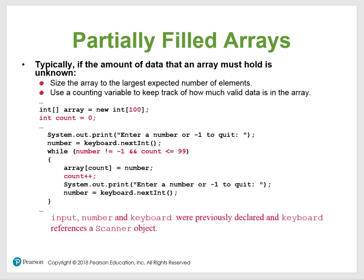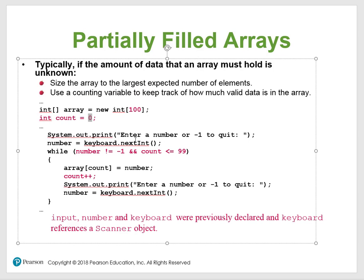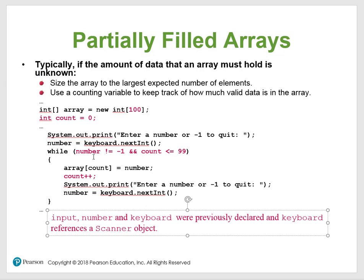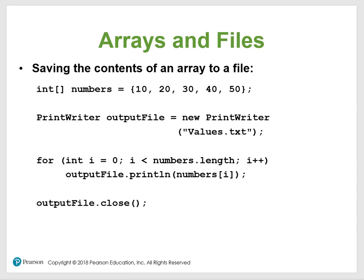For partial array fill — if the amount of data an array must hold is unknown, you size it to a large expected number of elements. Use a counting variable to keep track of how much valid data is in the array. For example, give the array a size of 100, start count at zero. Use a flag — since arrays can't be negative, you input a negative number via the Scanner keyboard object to flag false and exit the loop.